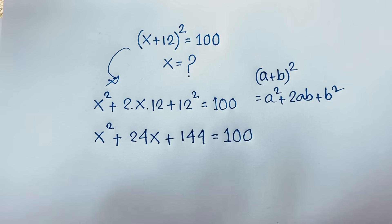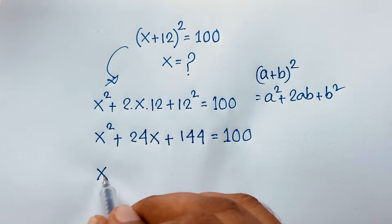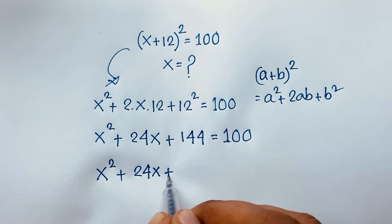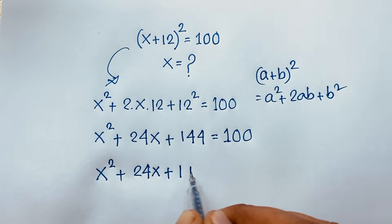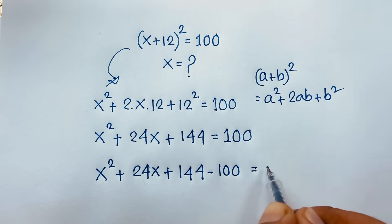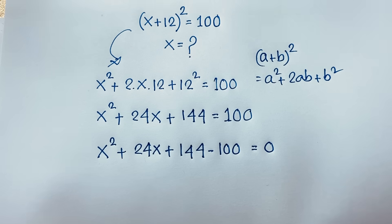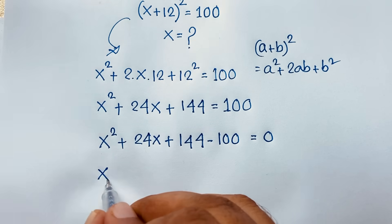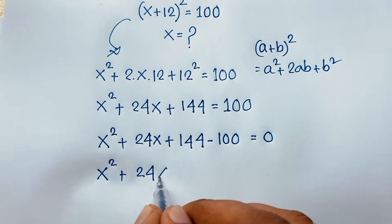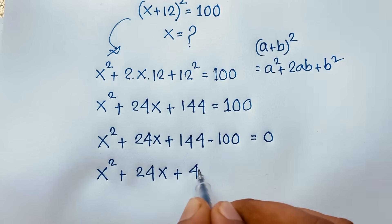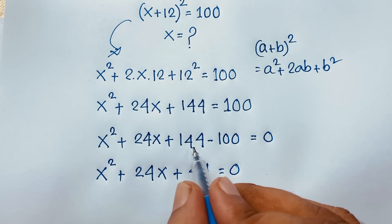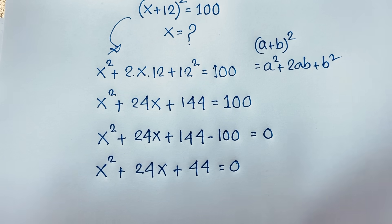It is an easy math problem. So x² + 24x + 144 minus 100 is equal to 0. I can see it will be x² + 24x + 44 = 0, because 144 minus 100 equals 44.